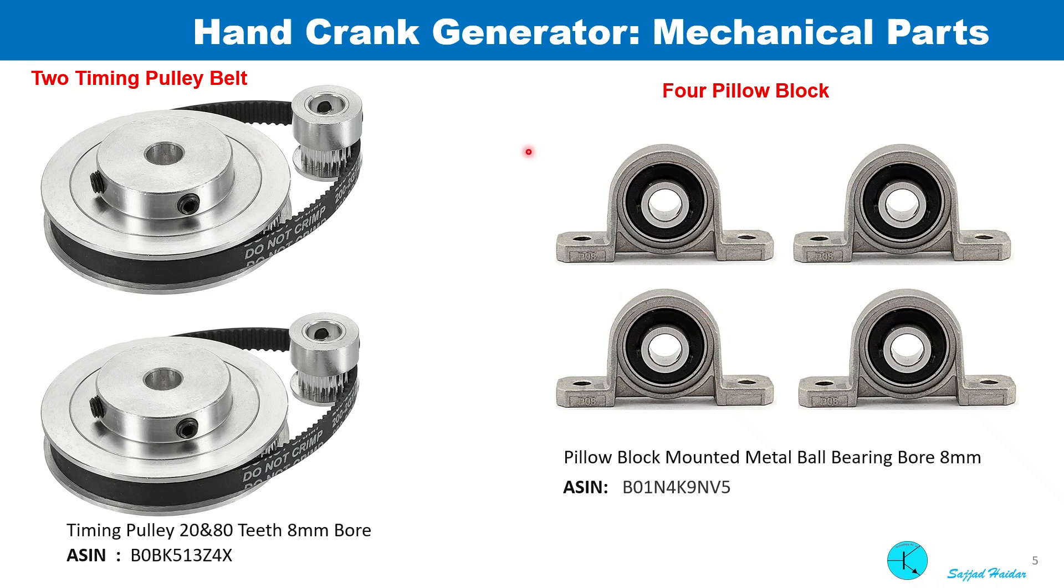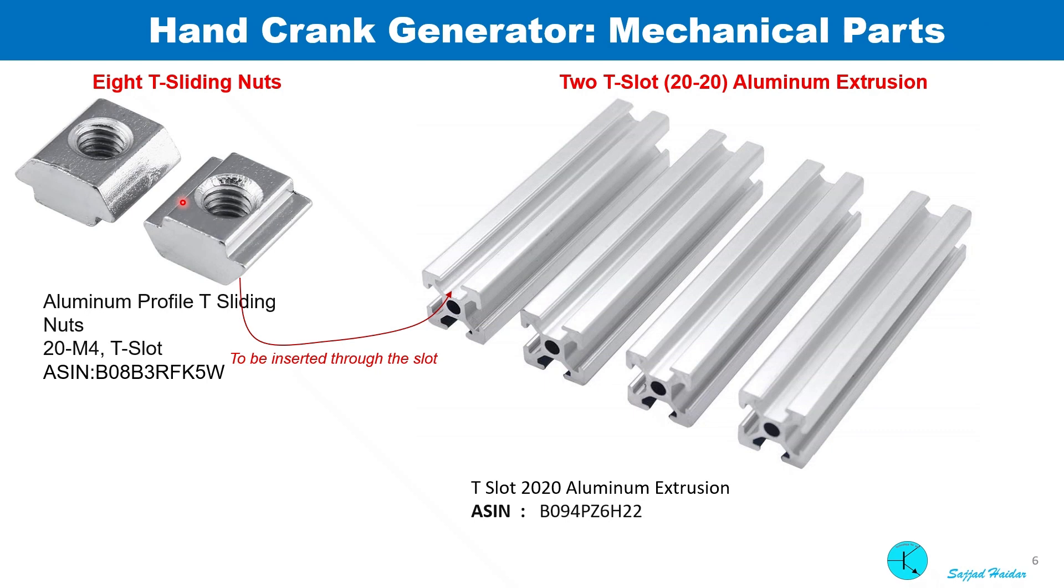There are several mechanical parts needed. These are some mechanical parts shown here to build the hand crank generator: two sets of timing pulley belts and four pillow blocks. These are bought from Amazon and part numbers are also given at the bottom. Eight T-sliding nuts and two T-slot aluminum extrusions are needed. These special nuts can slide through these holes and screws on top can fix any attachment.